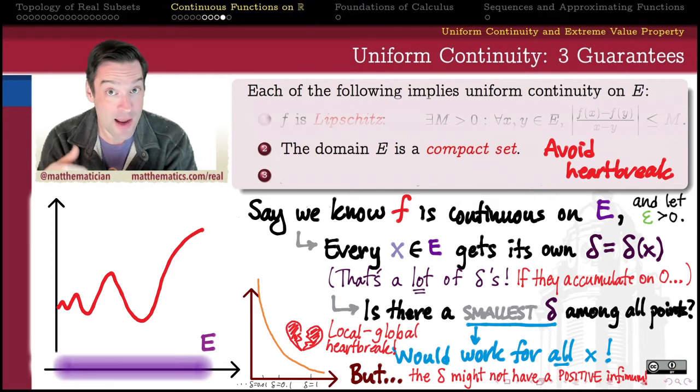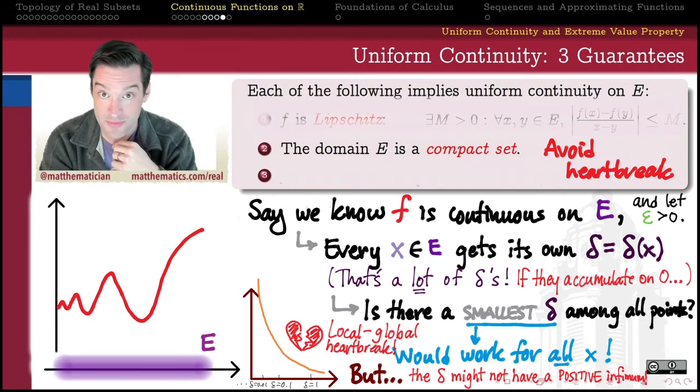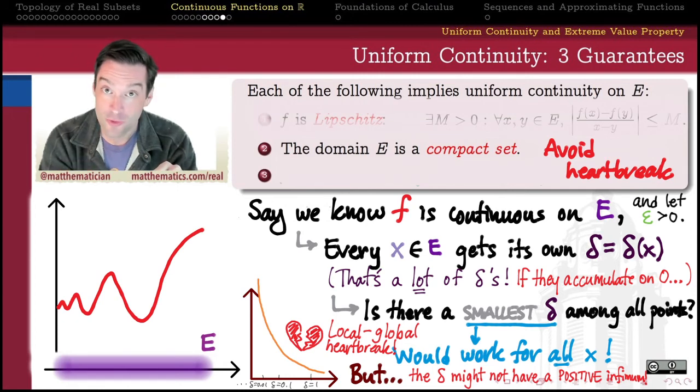And so the idea behind what we're going to try to prove in the next video is that if the domain of a continuous function is a compact set, then automatically that function will be uniformly continuous. I'll say that again. A continuous function on a compact domain is uniformly continuous.